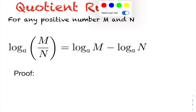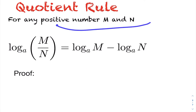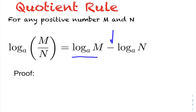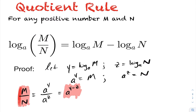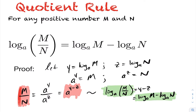For the quotient rule, we again let m and n be positive real numbers. We want to show that log base a acting on m divided by n equals log base a of m minus log base a of n. Let y equal log base a of m and z equal log base a of n. Writing in exponential form and dividing a to the y by a to the z, we get m over n equals a to the power of y minus z. Writing in logarithmic form gives us the quotient rule.